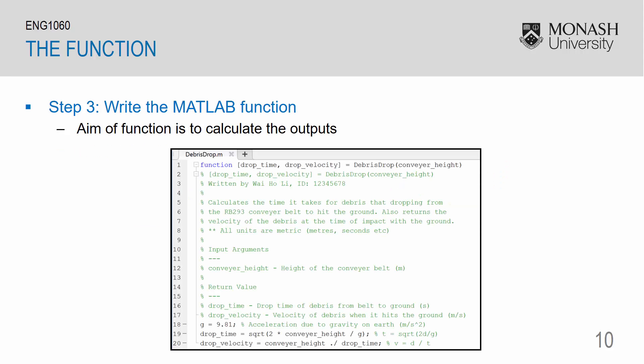Continuing on, we can fill out the documentation for our function, given by the syntax, the author, the description, and the input and output arguments. Remember that the aim of a function is always to calculate its outputs. Since we have two outputs, we should expect at least two lines to calculate the outputs. One being the drop_time on line 19. And the other would be drop_velocity on line 20. We have an additional line here on line 18, which specifies the value for gravity. We need to define the value of gravity in the function itself because we actually use it for the calculation of drop_time.